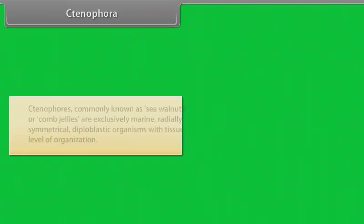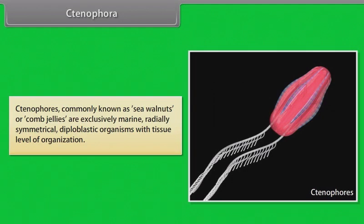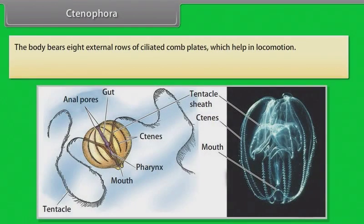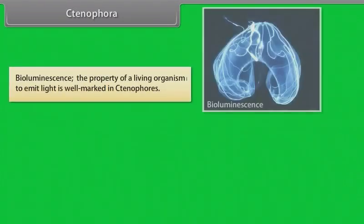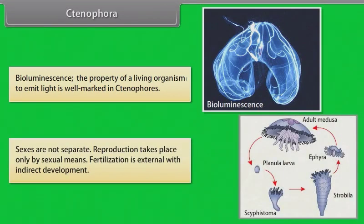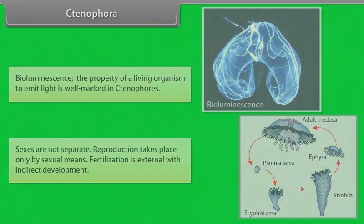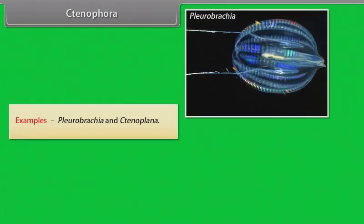Ctenophores, commonly known as sea walnuts or comb jellies, are exclusively marine, radially symmetrical, diploblastic organisms with tissue level of organization. The body bears eight external rows of ciliated comb plates which help in locomotion. Digestion is both extracellular and intracellular. Bioluminescence — the property of a living organism to emit light — is well marked in Ctenophores. Sexes are not separate. Reproduction takes place only by sexual means; fertilization is external with indirect development. Examples: Pleurobrachia and Ctenoplana.